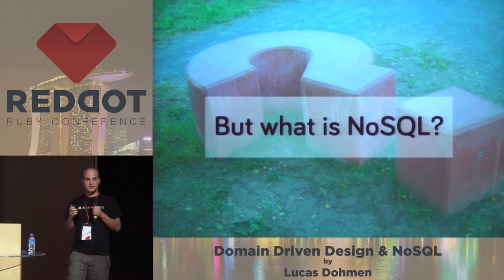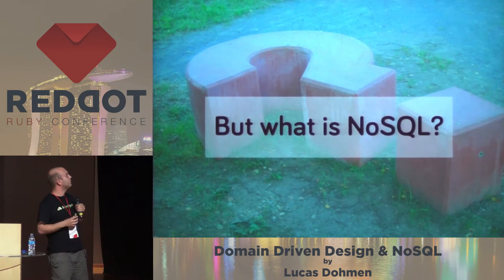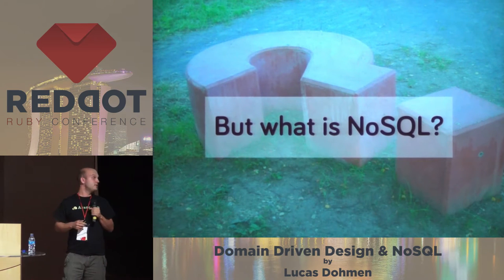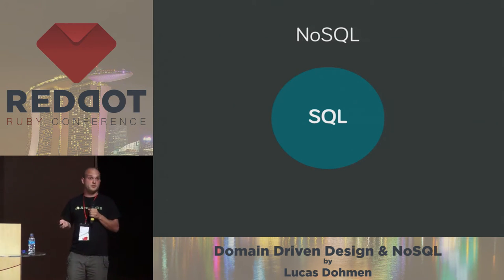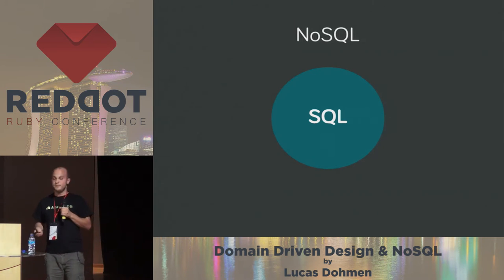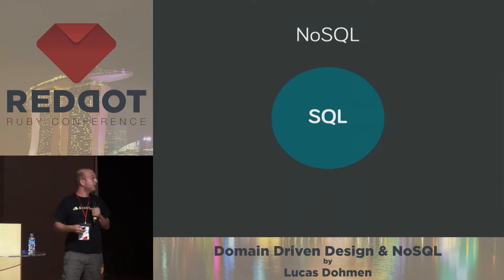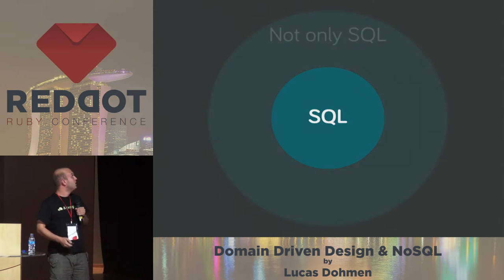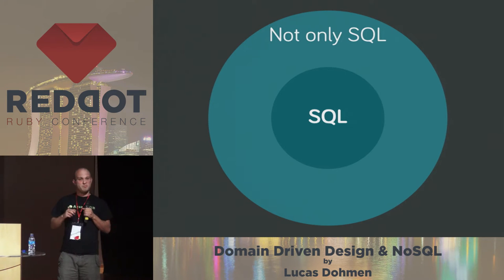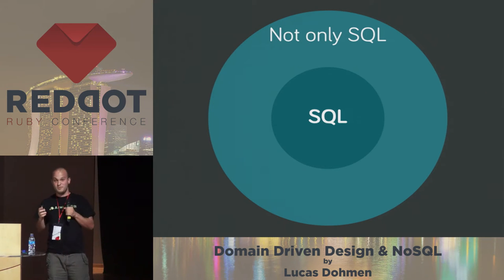A lot of people understand different things when they hear the word NoSQL. So I want to first confuse you a little bit more and then try to explain what I think NoSQL means. If you look at it, there is something called SQL, and then everything that's not SQL is obviously NoSQL, right? So if you have a chair, a chair is definitely NoSQL — maybe it can even scale. And people try to confuse you even more. They say the 'No' doesn't mean 'no' because that would be too obvious — it means 'not only'. So now even parts of SQL are part of NoSQL.